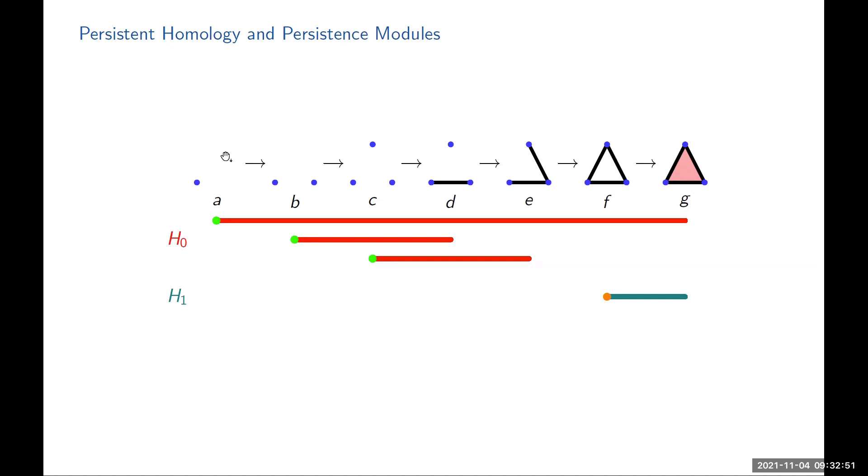For example, here in this picture, you see that there is a single connected component born at time A. Then at time B, there's another one. We record that with this red diagram, or barcode. Then at time C, another one is born. But at time D, the first two get connected, so we say that the second feature died at that time. Eventually we might get some one-dimensional holes or cycles. At time F, we get this triangle. Then at time G, it's filled in so it dies. This is how you keep track of this information.